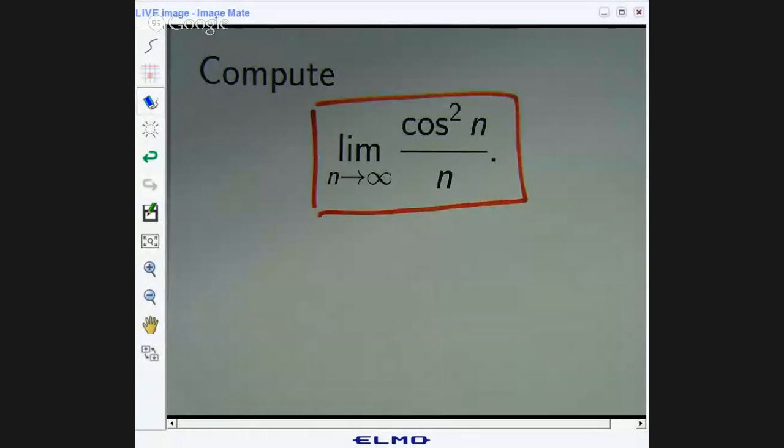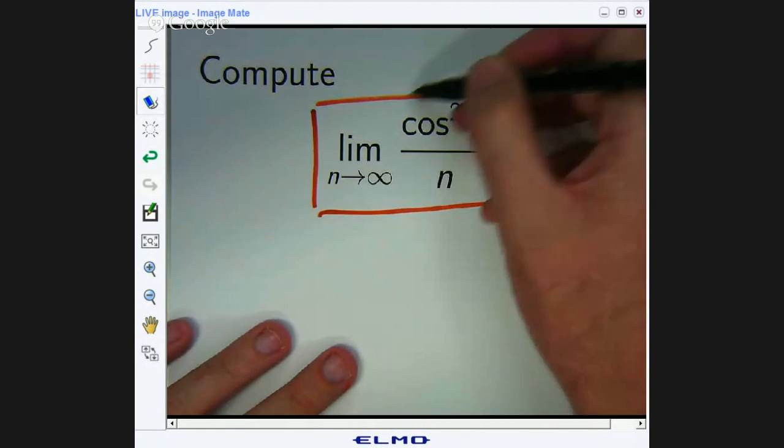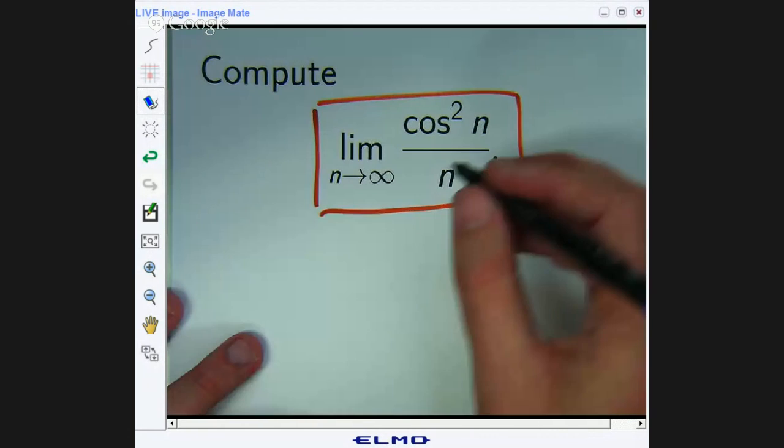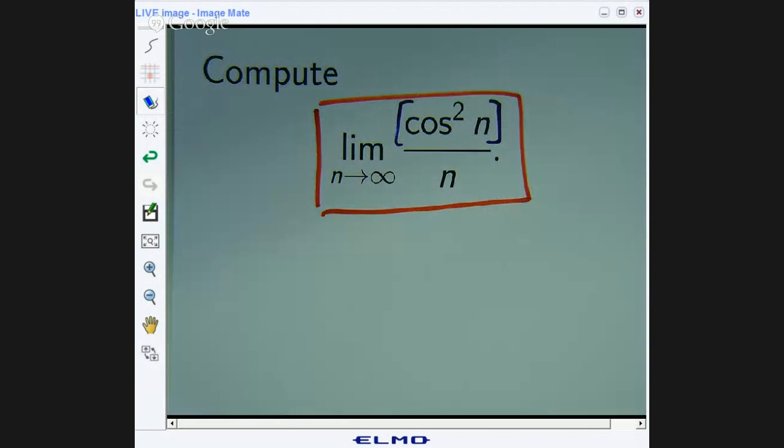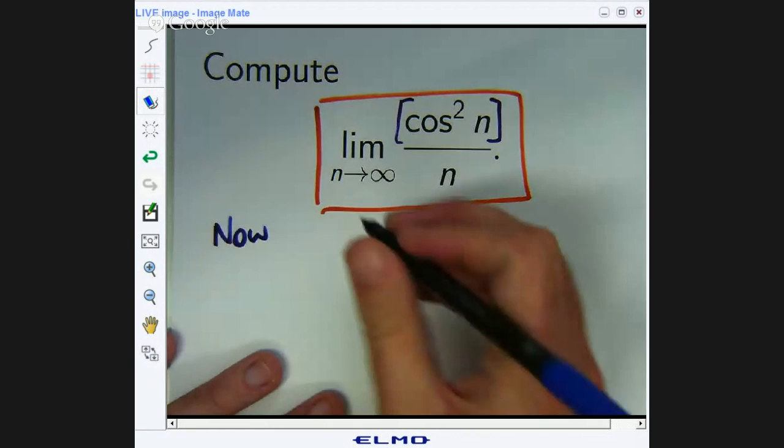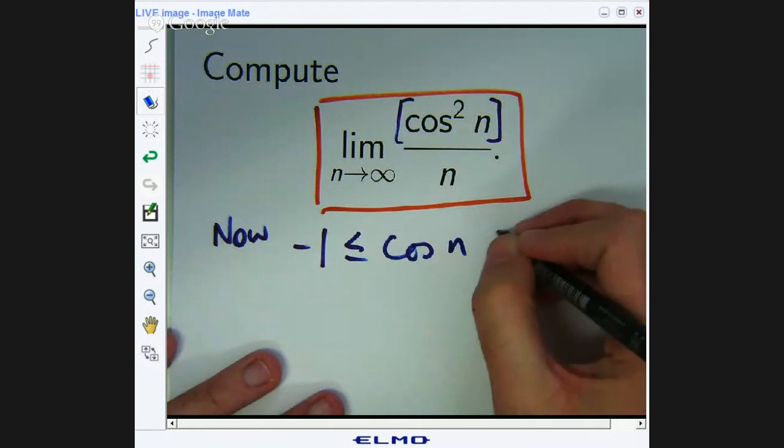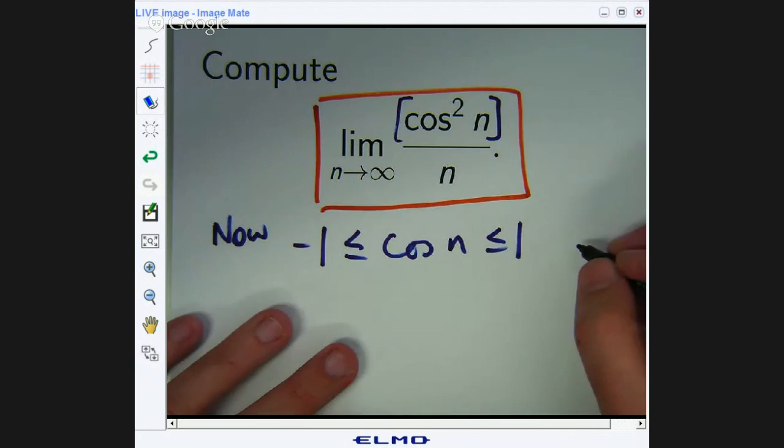We can apply the basic squeeze theorem just by formulating some inequalities around this sequence. So let's try to think of some inequalities involving cosine squared or cosine n. Now we know that this is true. For each n, cosine function is bounded between negative one and one.